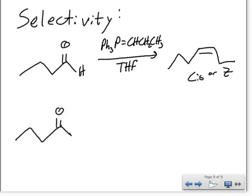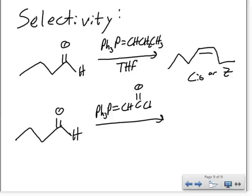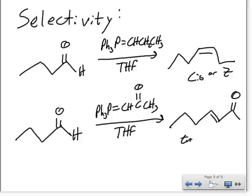If we do the same starting material, but now look at a phosphorus ylid where we have a carbonyl, again, we'll use the same solvent. In this case, now we're going to end up with the trans or E isomerization.